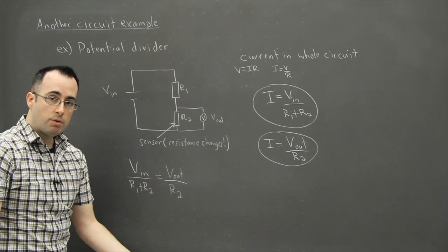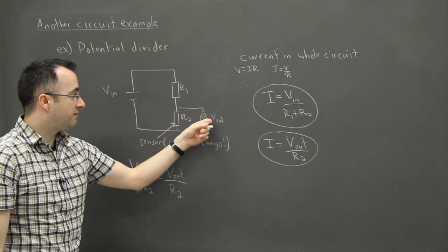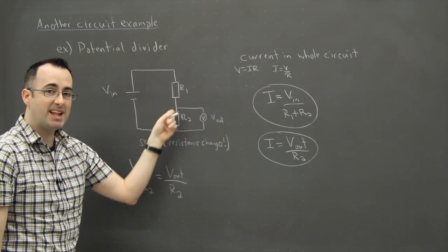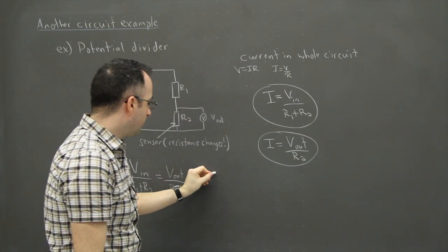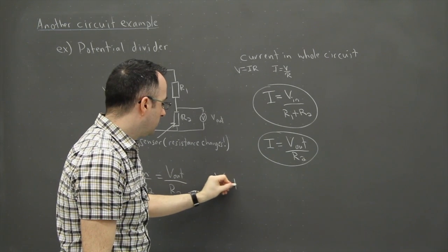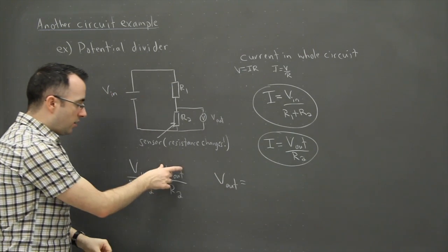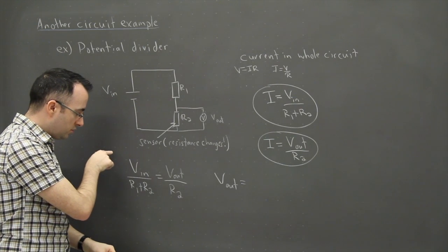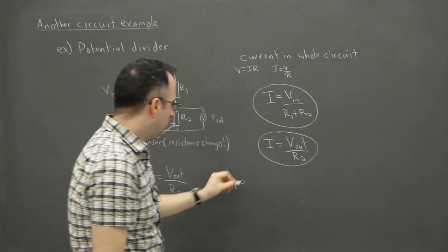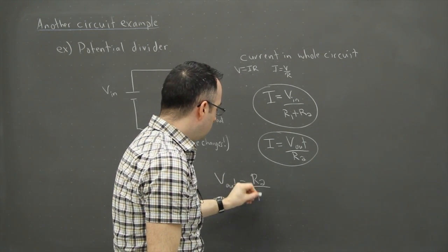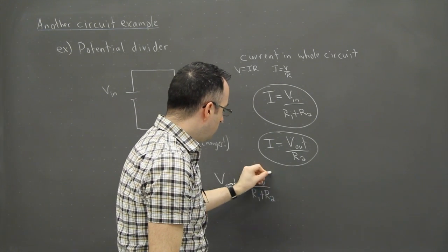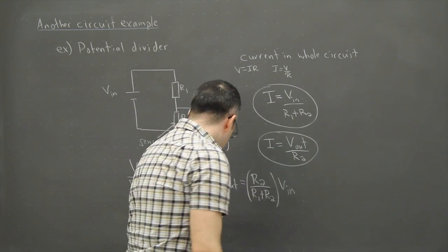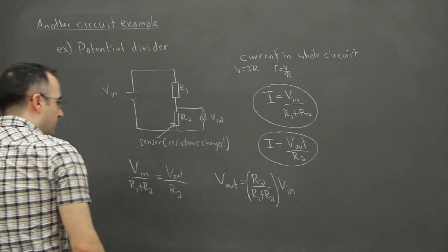So I have Vin over R1 plus R2 is going to equal Vout over R2. Now, the goal, the reason why we do this is we want to find out what Vout is. In other words, what's going to be the voltage across this sensor? So in this case, I want Vout on its own. If I want Vout on its own, that means I have to take this R2 and move it over here. So it's going to be R2 over R1 plus R2, all that times Vin. This, in my opinion, is really important.